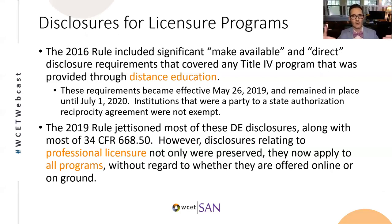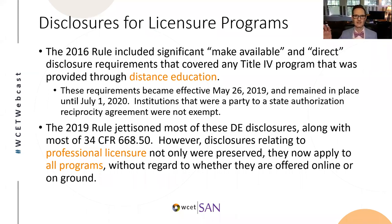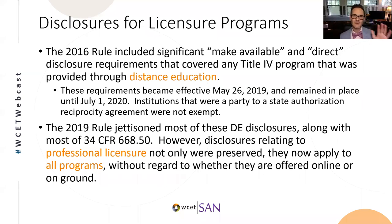The 2019 rule, effective this year on July 1st, got rid of most of those disclosure requirements for professional licensure and other programs that were required in the overall rule, insofar as they pertain just to distance education. Under the 2016 rule, those disclosure requirements were largely wrapped up in 668.50 — a whole section created in 2016 around disclosures and other items pertaining to distance education. This new rule said we're dumping pretty much everything in 668.50 except a couple of things. One of those exceptions is these disclosures for professional licensure programs, which the department said they think are really valuable and want to move forward with, with some changes.